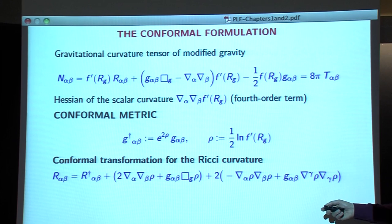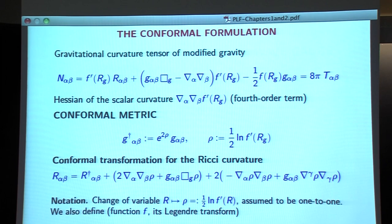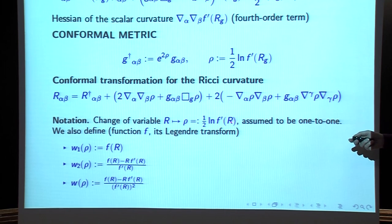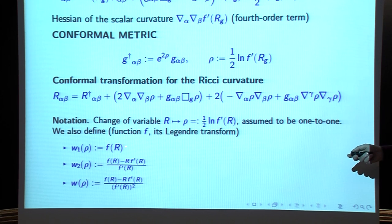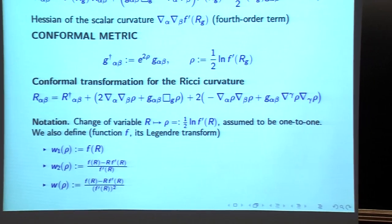You have a wave operator and the variation, and here you have the same structure. Of course there are some coefficients and lower order terms produced. We do a change of variable: instead of working with capital R, we now would like to work with ρ. There is a natural change of variable, which we assume to be one-to-one. By using this change of variable, we can express combinations of f and its derivatives as functions of ρ — giving us w₁(ρ), w₂(ρ), and w(ρ).